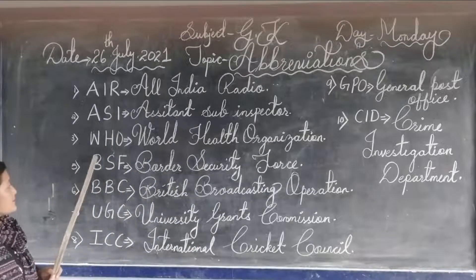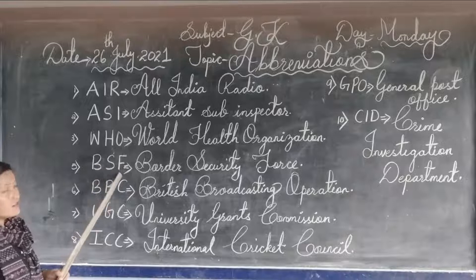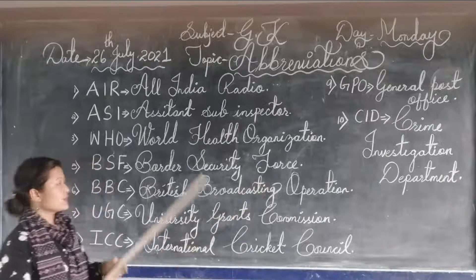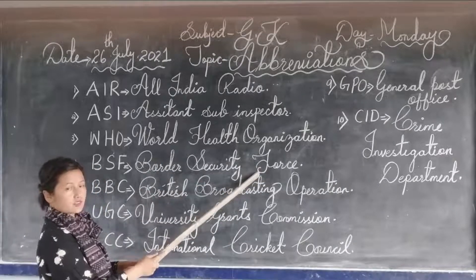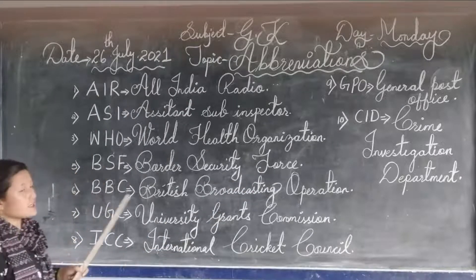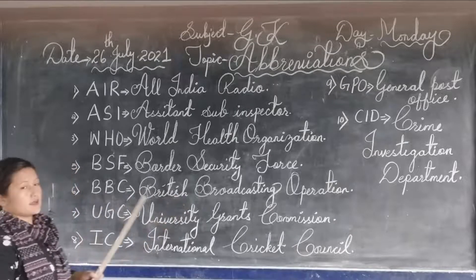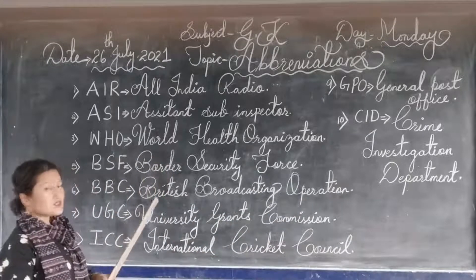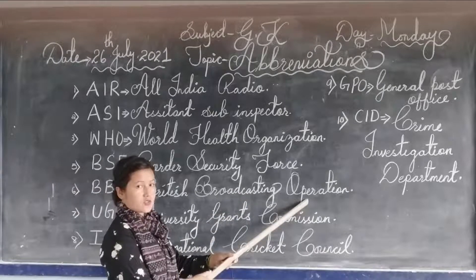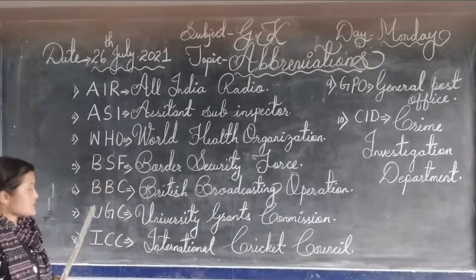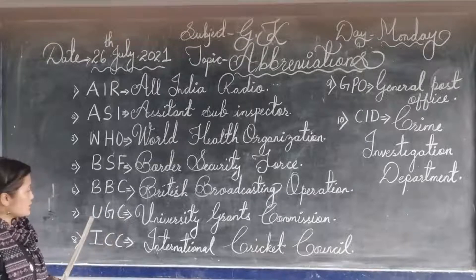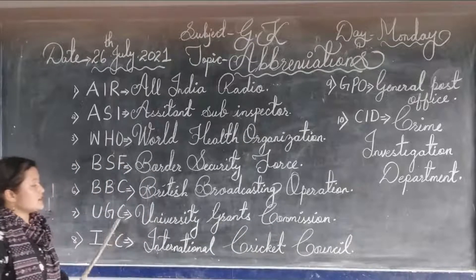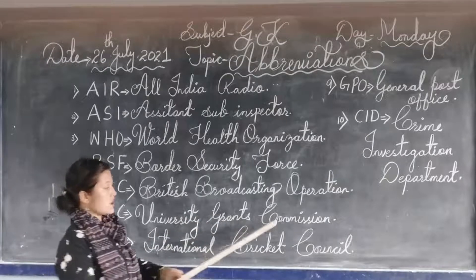Now the fifth one is BSF. The full form of BSF is Border Security Force. Now the sixth one here is BPC. The full form is British Broadcasting Operation. Now the seventh one here is U-G-C — University Grants Commission. The full form of U-G-C is University Grants Commission.